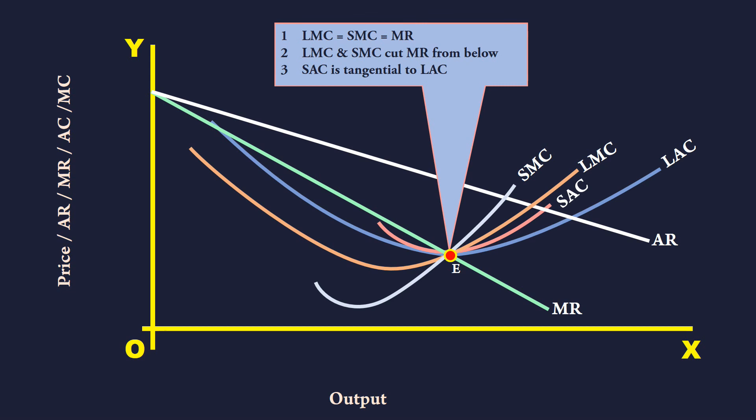The firm is in long run equilibrium at E. It is known as optimal scale equilibrium because the firm is operating at the minimum point of the long run average cost curve LAC. What is to be noted here is E is the minimum point of the short run average cost curve SAC also. It means the plant is optimal.